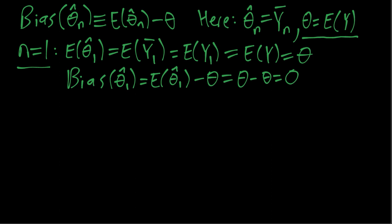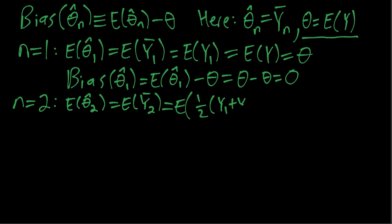So we can try this again with n equals two. The same idea, we'll compute the mean of our estimator. So now I put a subscript two for the sample size, which again is the sample average. So that's one half times the sum of our two observations.